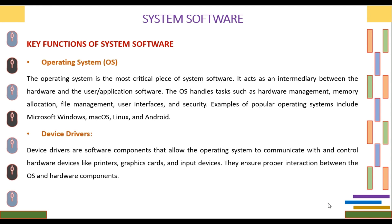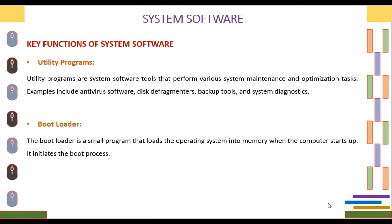The third function of system software is Utility Programs. Utility programs are system software tools that perform various system maintenance and optimization tasks. Examples include antivirus software, disk defragmenters, backup tools, and system diagnostics.